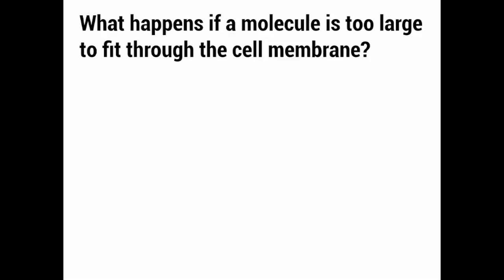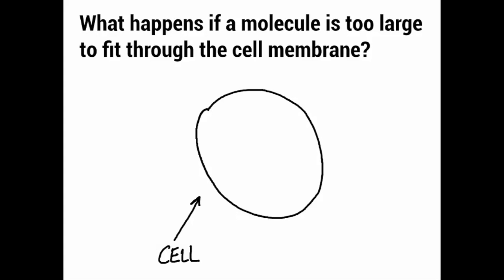However, what happens if a molecule is too large to fit through the cell membrane? Here is a cell, and the membrane is the part around the cell. So what happens if a molecule wants to get in but it's too big to fit through? What ends up happening is the molecule attaches to the cell membrane, and the cell membrane creates a slight opening in which the molecule can go into.